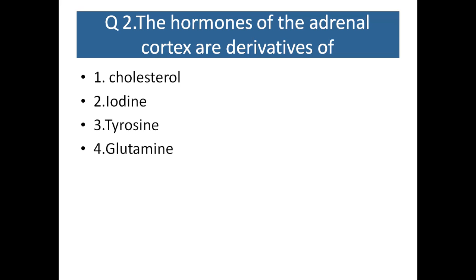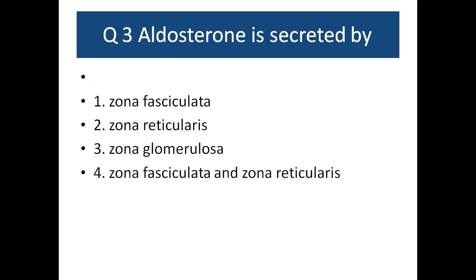Question number two: the hormones of the adrenal cortex are derivatives of — cholesterol, iodine, tyrosine, or glutamine. Question number three: aldosterone is secreted by — zona fasciculata, zona reticularis, zona glomerulosa, or both zona fasciculata and zona reticularis.